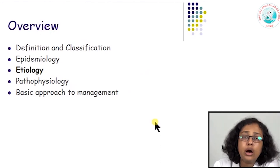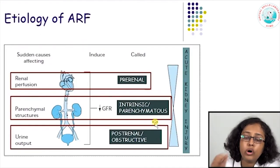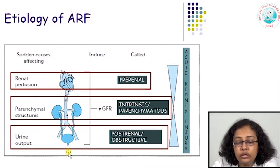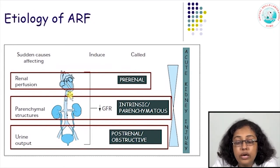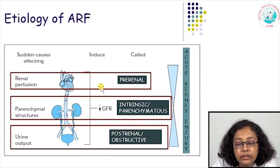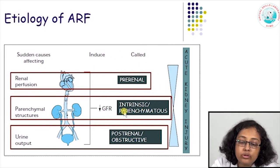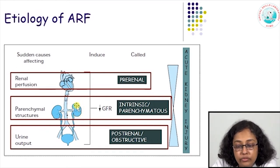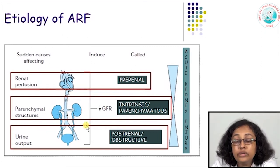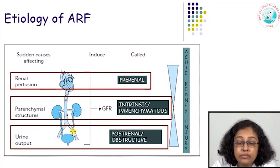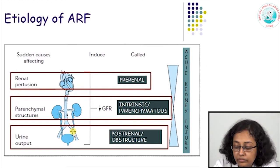Let us look at how the causes of acute renal failure are classified. Broadly, we define causes according to the location of the insult. There could be a cause decreasing renal perfusion — inadequate blood supply to the kidneys — which is one of the most common causes, defined as pre-renal acute renal failure. There could be actual damage to the kidney tissue itself, defined as intrinsic or parenchymatous kidney failure. And the kidneys may produce enough urine but there is a blockage in the outflow — known as post-renal or obstructive acute renal failure.